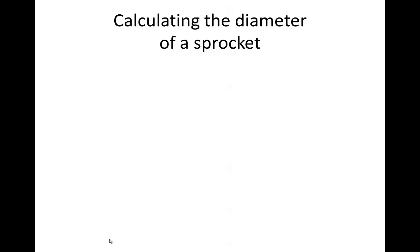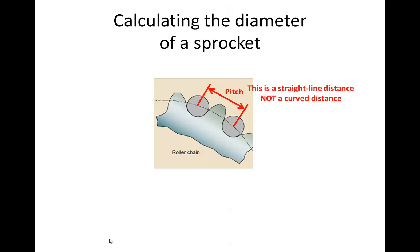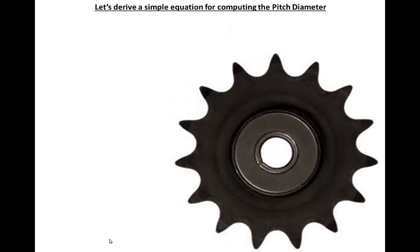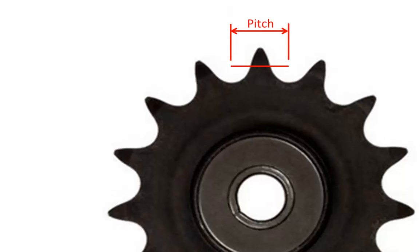Now let's talk about how to calculate the diameter of a sprocket. It is important to realize that the cylindrical rollers of the chain will sit into the spaces between the teeth. The pitch is the straight-line distance from tooth to tooth — not a curved distance — since the links of the chain go straight from tooth to tooth. The diameter of the circle which goes to the center of the chain link rollers is called the pitch diameter.